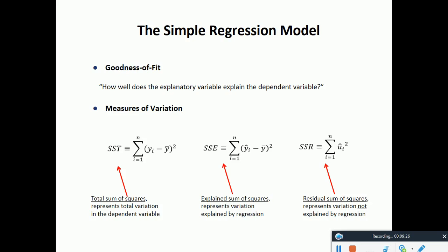Now looking at the sum of square explained, which is SSE. For SSE, instead of yi there is y-hat. When it becomes y-hat, it becomes the sum of square explained — that's not the actual value but the predicted value. For example, if I predict that a smoker's cost would be $300 or an over-eater's cost $500, y-hat is the estimated value.